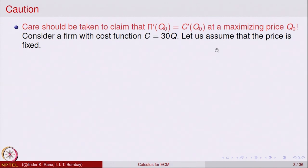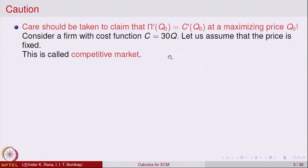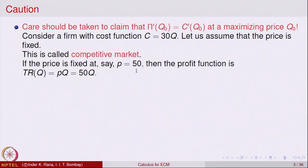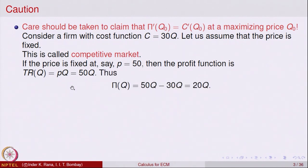Let us look at an example to illustrate this caution. Consider a firm with cost function C equal to 30Q, and assume that the price of the product is fixed in the market — this is normally called a competitive market. If the price is fixed at P equal to 50, then the total revenue is P times Q, which equals 50Q, and the profit is total revenue minus total cost: 50Q minus 30Q, which equals 20Q.